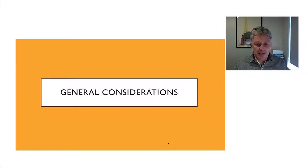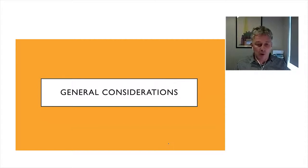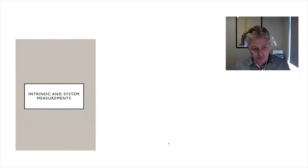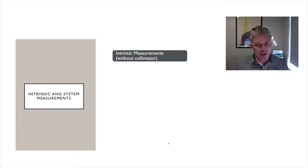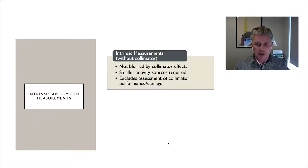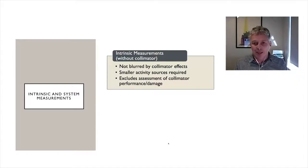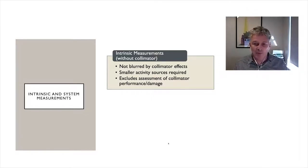Before going into detail, we need to consider some general considerations for how we set up acquisitions and processing for quality control. First, intrinsic versus system measurements. Intrinsic measurements are without the collimator, and they offer the advantage that the detector is not blurred by any collimator effects. So if we have non-uniformities, we're more likely to see them intrinsically. Intrinsic measurements also allow us to use smaller activity sources since there's no collimator in place.